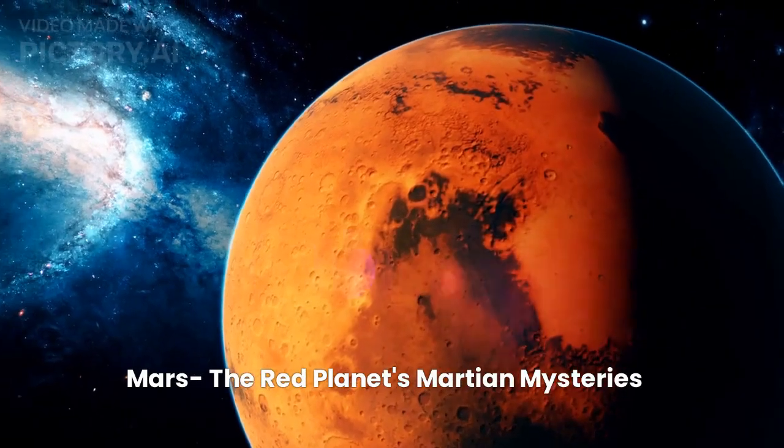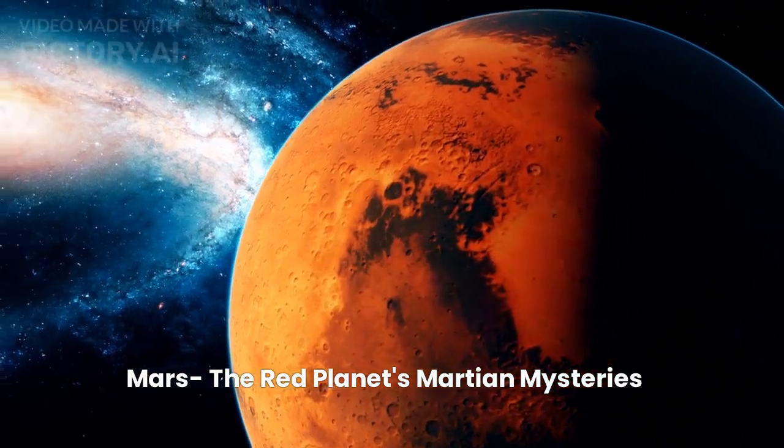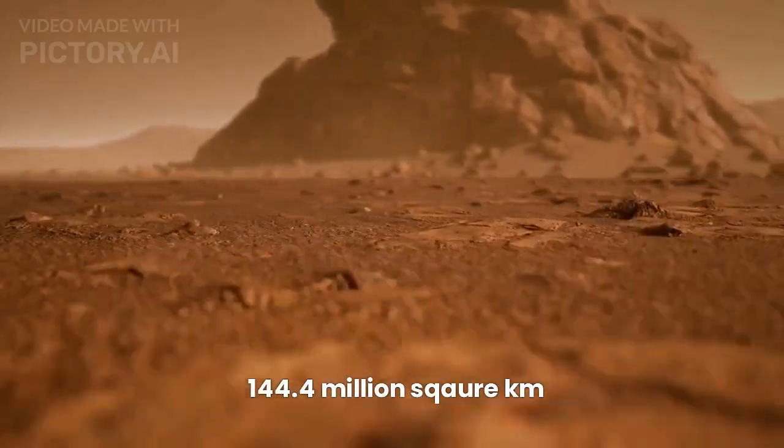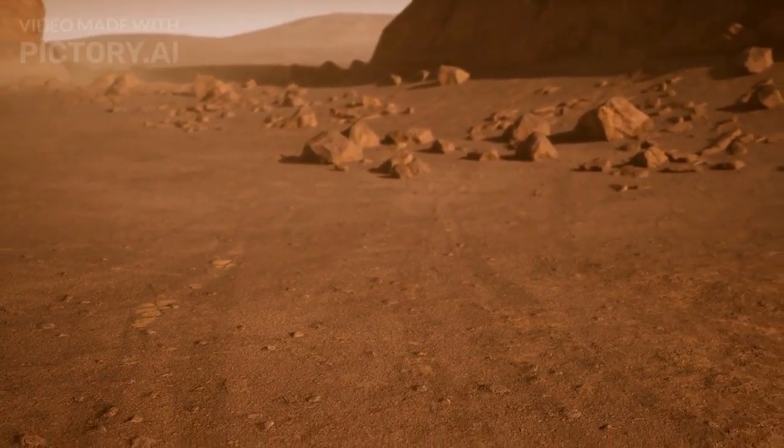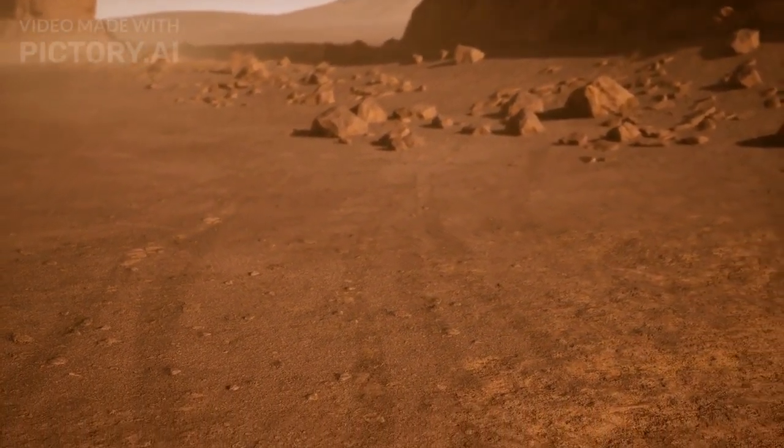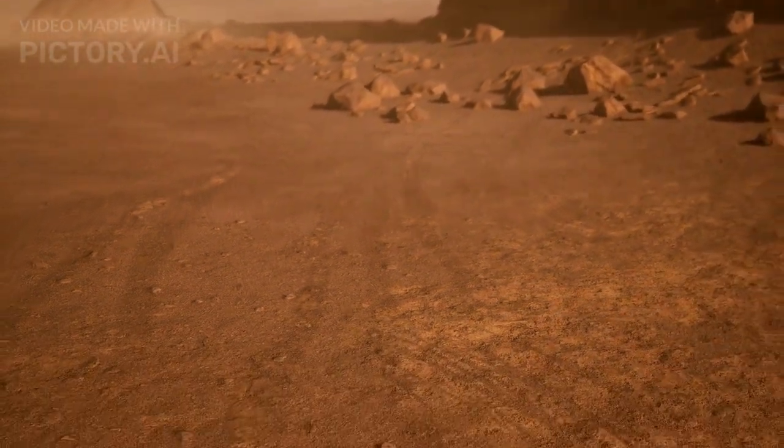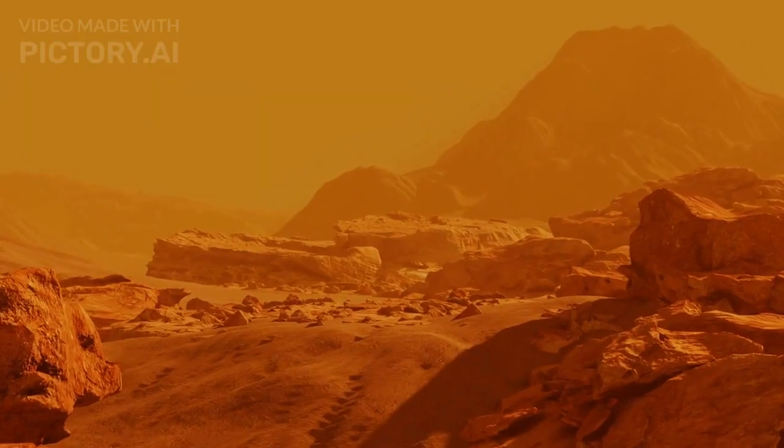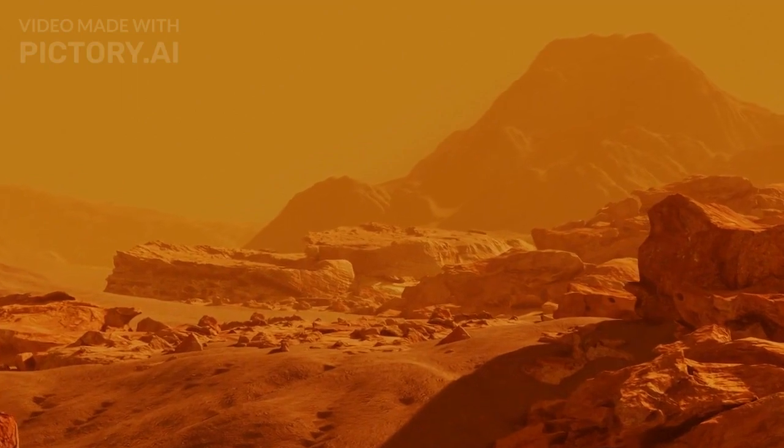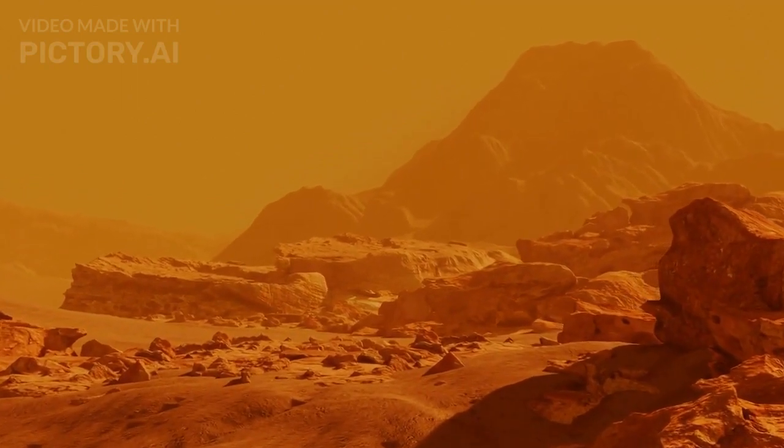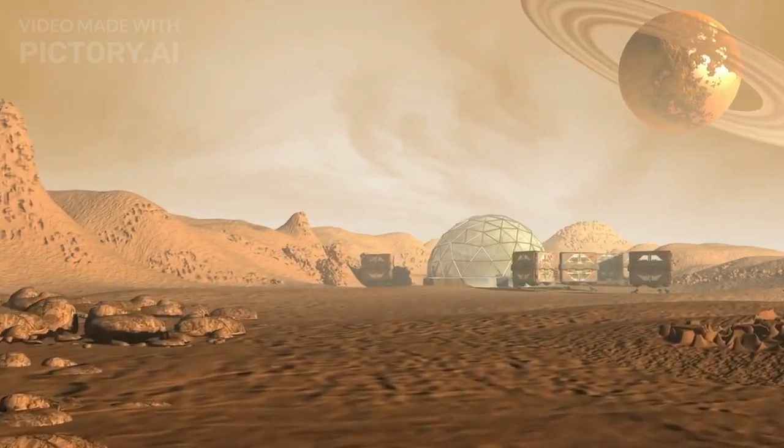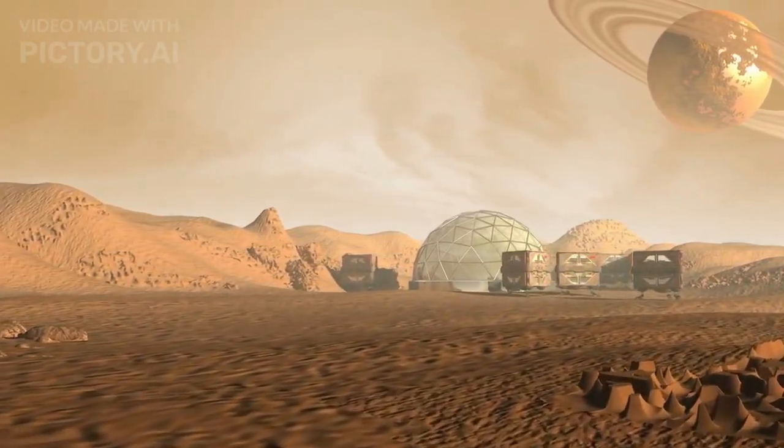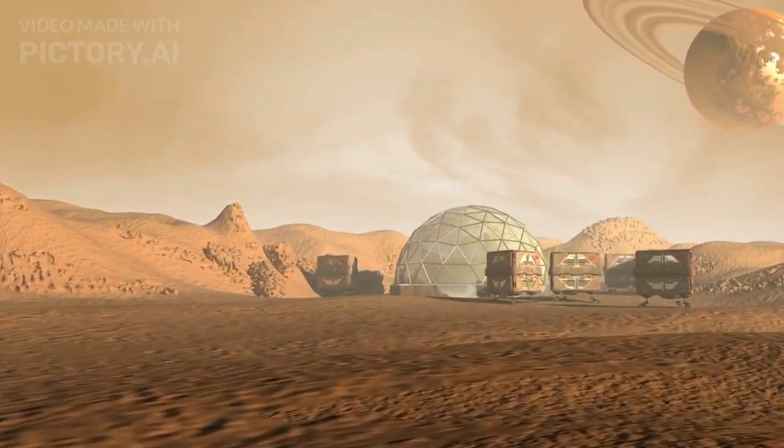Fourth, Mars the red planet's Martian mysteries. The surface area of Mars is 144.4 million square kilometers. Mars, known as the red planet, features a rusty surface due to iron oxide, giving it a distinct hue. Mars boasts a diverse landscape, from vast valleys to towering volcanoes. While it has a thin atmosphere unsuitable for human survival, ongoing exploration aims to uncover its potential habitability in the past or present.